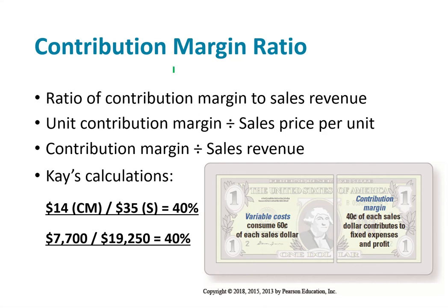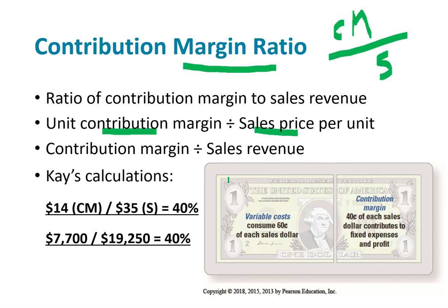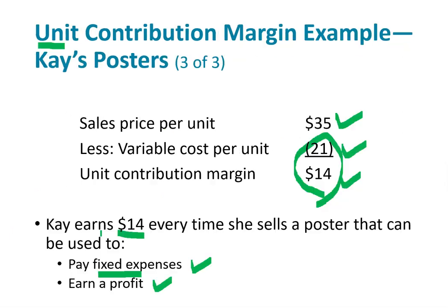Another way of looking at the contribution margin is the contribution margin ratio, which equals the contribution margin divided by the sales price. Our contribution margin divided by our sales price gives us a percentage — that percentage is the contribution margin ratio. You can do it on a per-unit basis or in total, and these numbers come from the calculation in the previous slide.